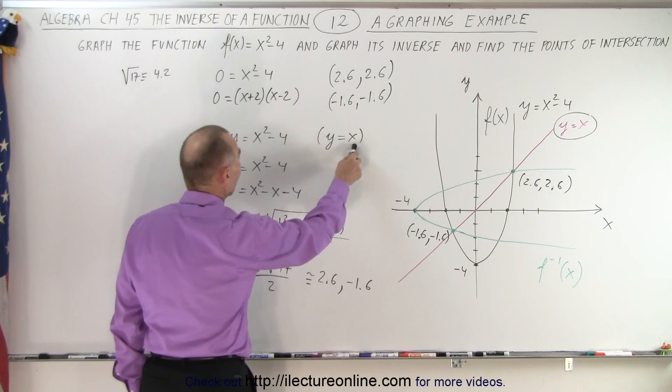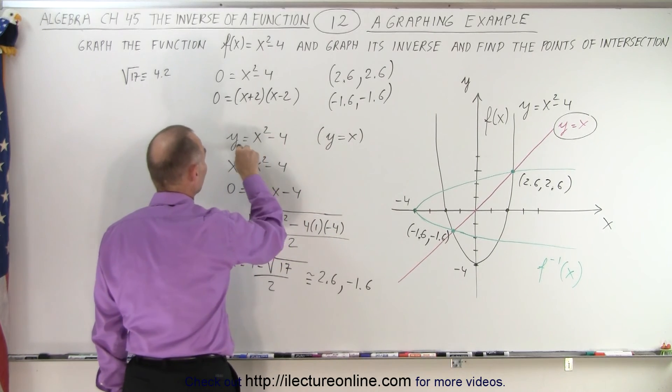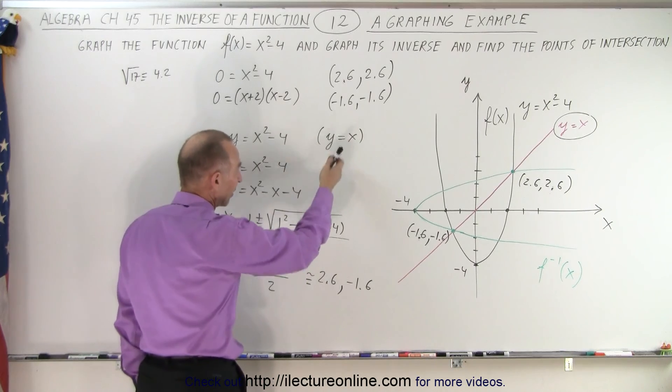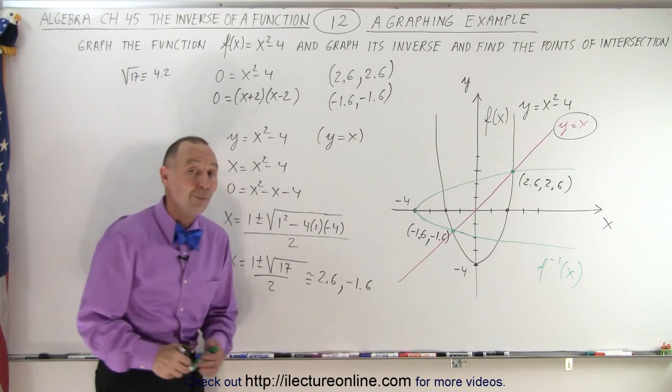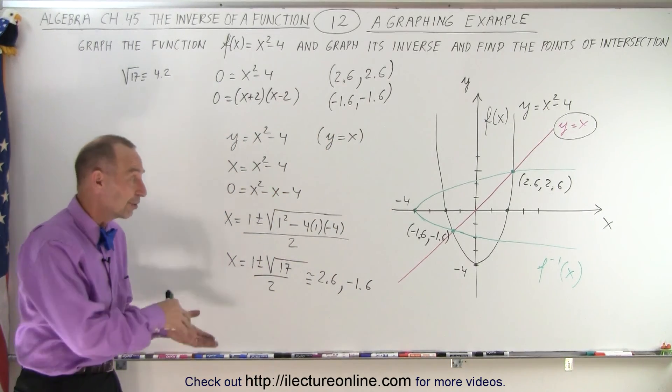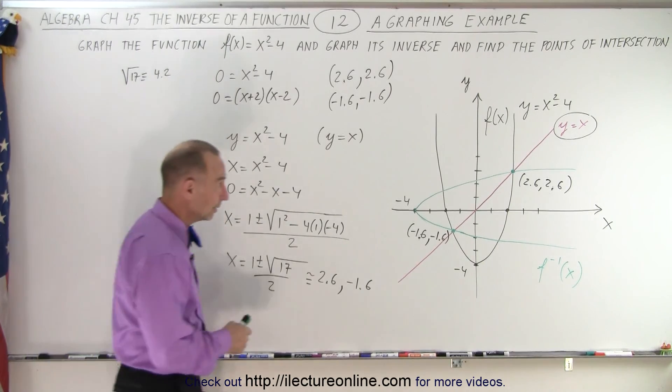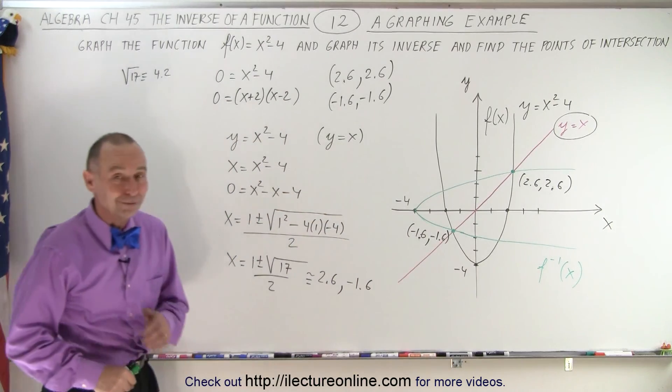Realizing that y equals x. So we take the function, we replace y by x, we solve for x. And of course, whatever x is, y is the same thing. And so those are the points of intersection between the function and its inverse. And they always will be on the line y equals x. And that is how it's done.